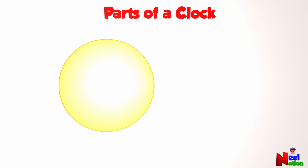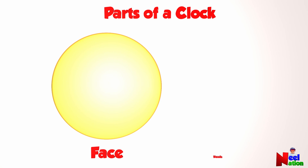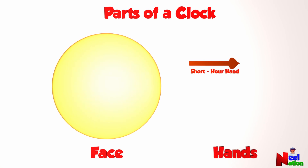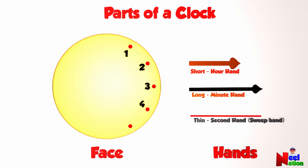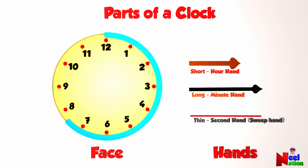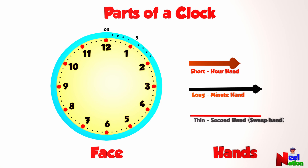Let's look at the parts of an analog clock. The main parts of a clock are the face and hands. The clock has a short hand called the hour hand. The clock has a long hand called the minute hand. Some models of clocks also have a thin second hand, also called a sweep hand. There are 60 lines or dots evenly spaced in a ring around the face of the clock, showing minutes and seconds.